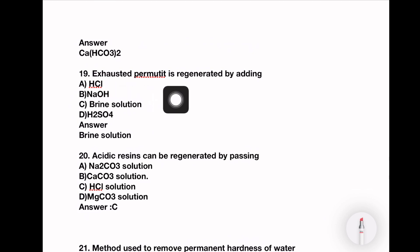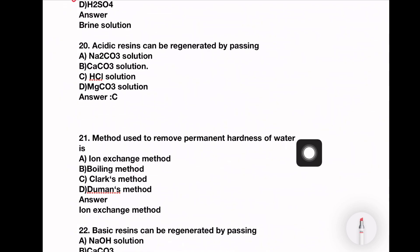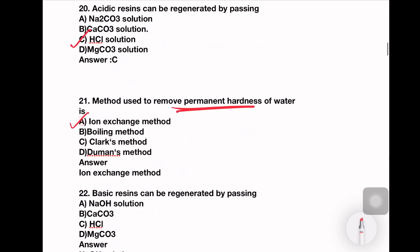Exhausted permutit is regenerated by adding NaCl solution, Na2CO3 solution, Ca(HCO3)2 solution, HCl solution, or MgCO3 solution. Answer is NaCl solution. The method used to remove permanent hardness of water: ion exchange method, boiling, Clark's method, or lime-soda method. So ion exchange method. Ion exchange method will remove the permanent hardness.